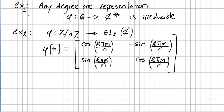We saw an example of a degree 1 representation, which is of course irreducible. Now here we have a representation seen in a previous video: phi takes from the factor group ℤ/nℤ to the general linear group, and this representation is given by the rotation matrix — cosine 2π·m/n — where m and n are as defined. This representation is not irreducible.